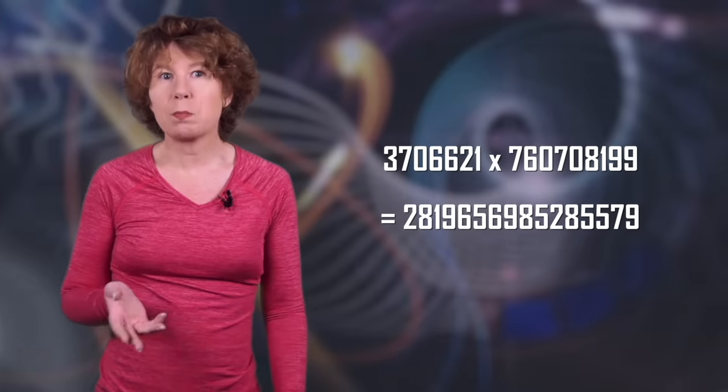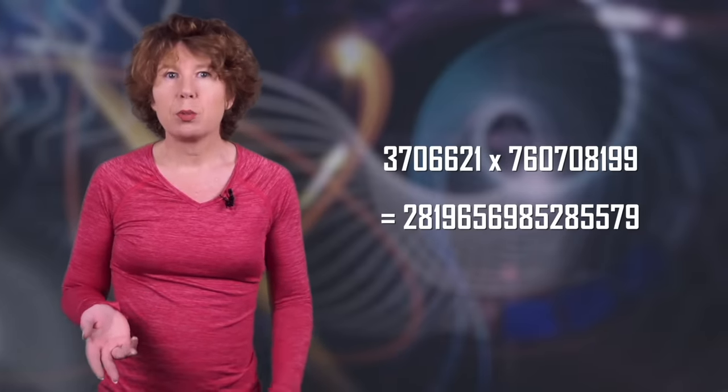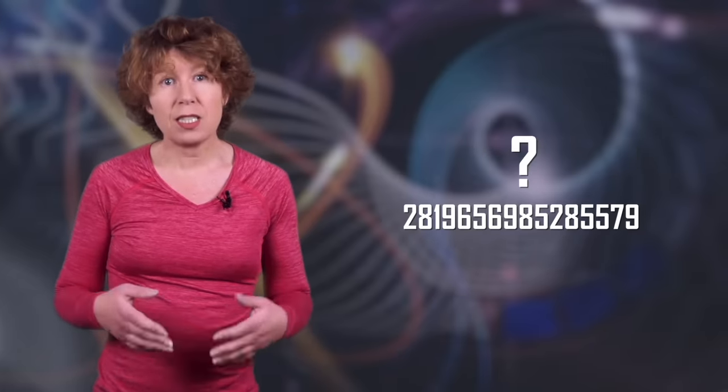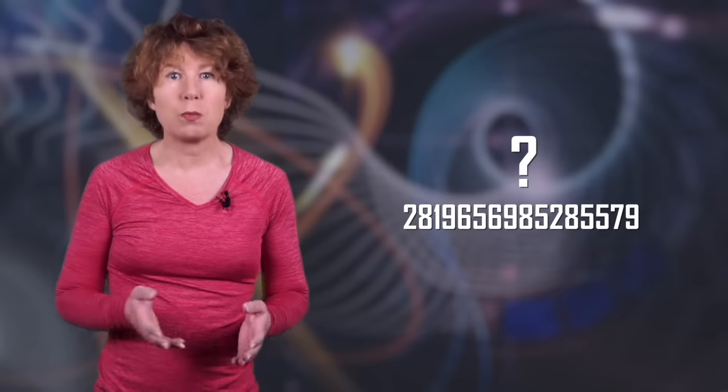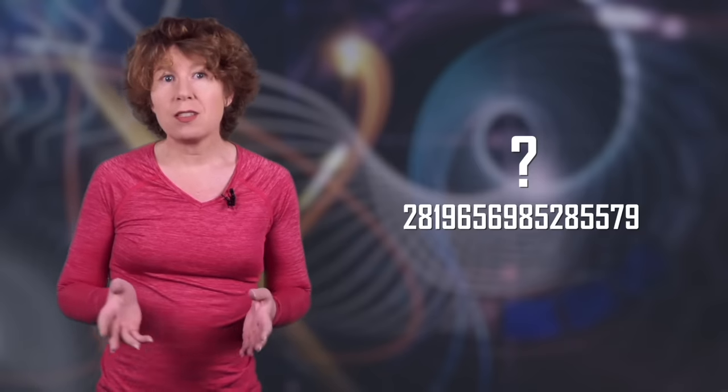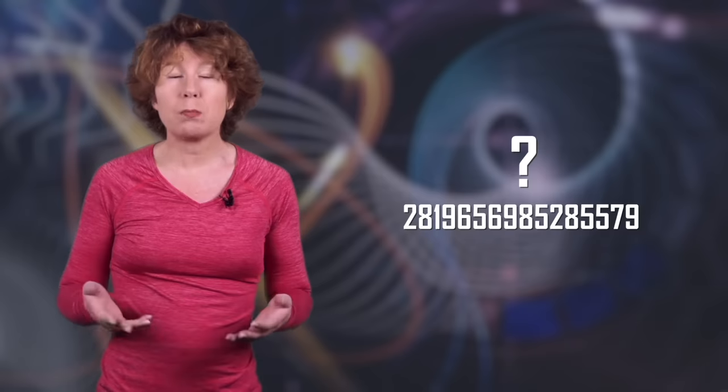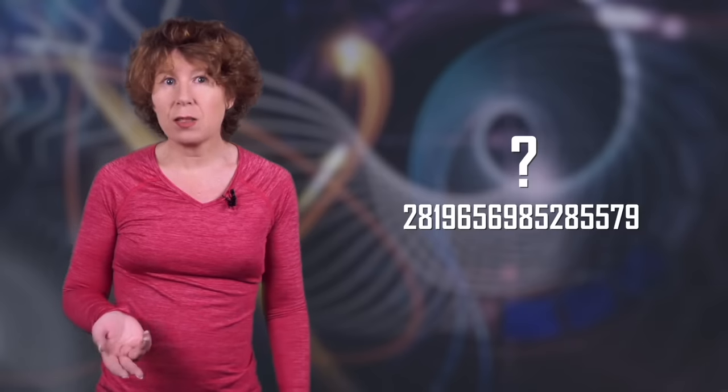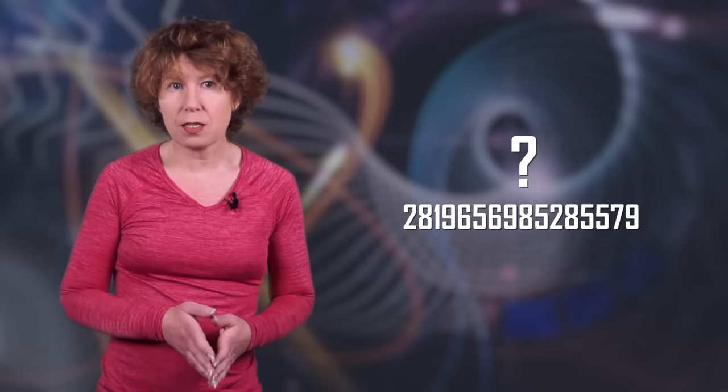These codes work by using an algorithm that scrambles up data in a way that's easy to do but very difficult to undo. The best known example is taking two large prime numbers and multiplying them. This is easy enough. But once you've multiplied them, it's very difficult to figure out what the prime factors were. So you use the two multiplied numbers to scramble up data. But to unscramble the data, you'll need one of the prime factors. This method is used by the algorithm known as RSA after its inventors Rivers, Shamir, and Adelman.